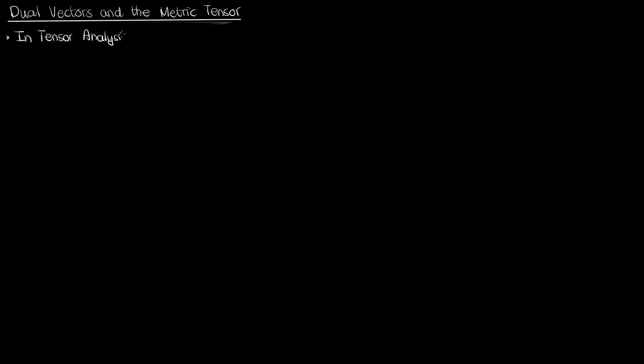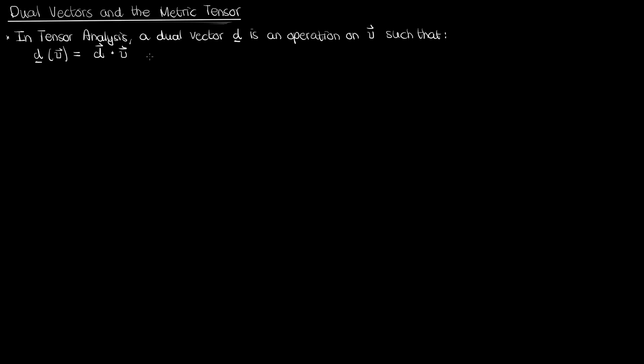In the context of tensor analysis, a dual vector d is an operation on the contravariant vector v that returns the inner product of v and the vector d that corresponds to the dual vector d. It takes a contravariant vector and spits out the dot product, which is a real number, and it's also a linear function because the dot product is a linear operator. This is consistent with what we want from a dual vector. I'll call this definition of the dual vector equation 1.